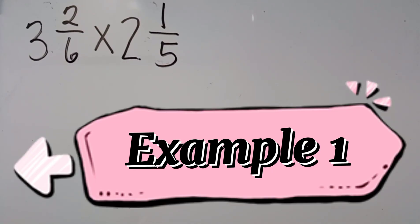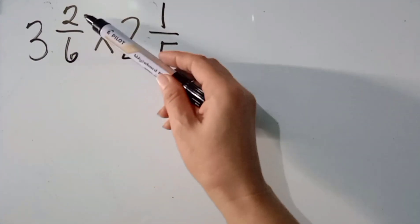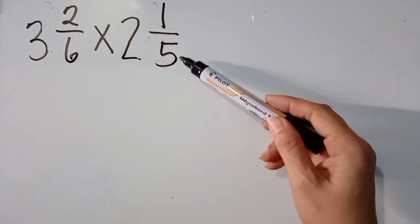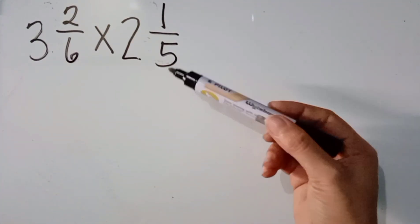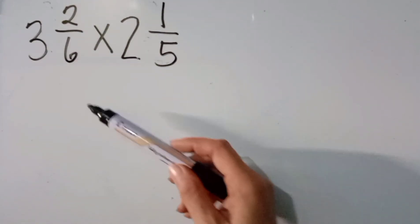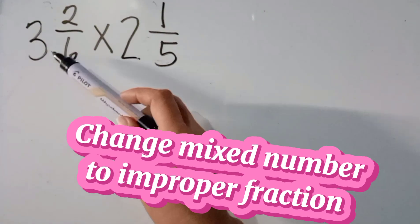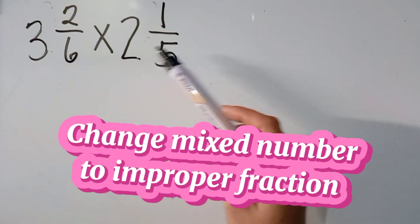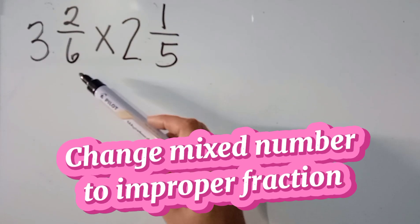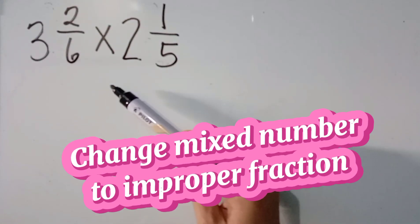Let's have example number one: 3 and 2 sixth times 2 and 1 fifth. So, what is the first thing that we are going to do? We are going to change mixed numbers into improper fraction.